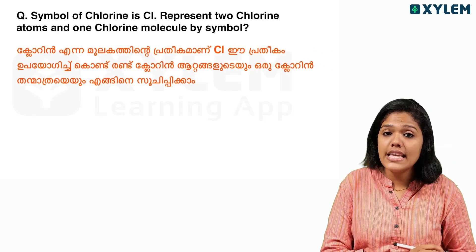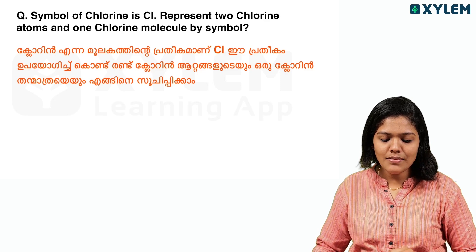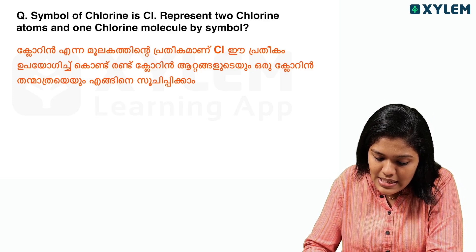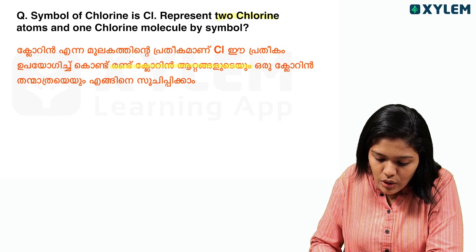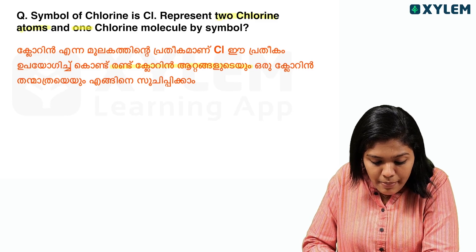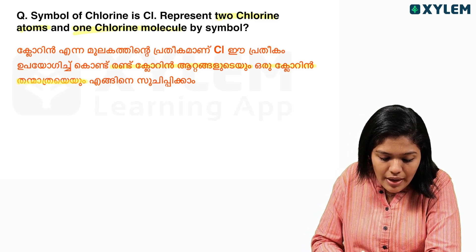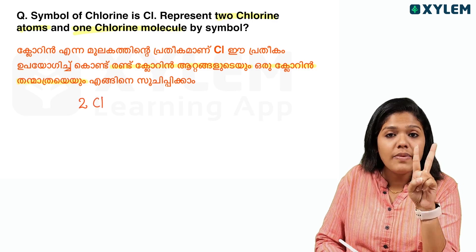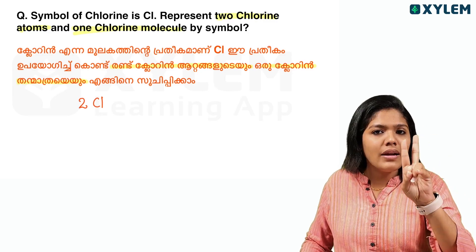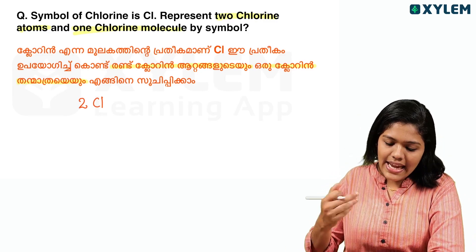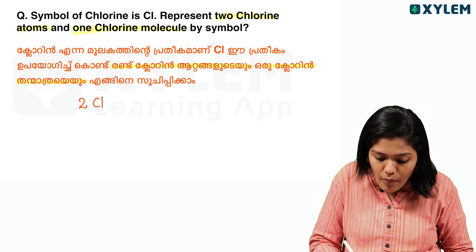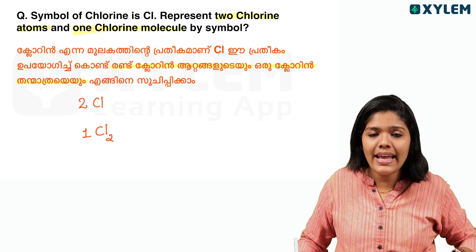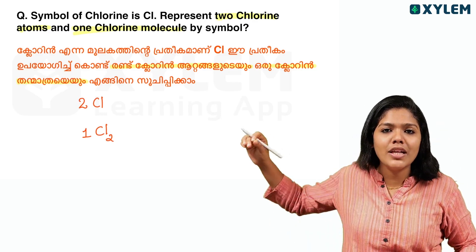The symbol of chlorine is Cl. Represent two chlorine atoms and one chlorine molecule by symbol. Cl is the symbol for one chlorine atom. One chlorine molecule is diatomic — two atomic — written as Cl2. Two chlorine molecules is 2 Cl2.